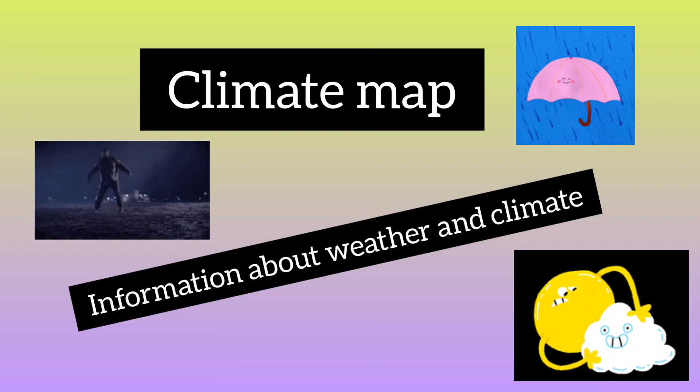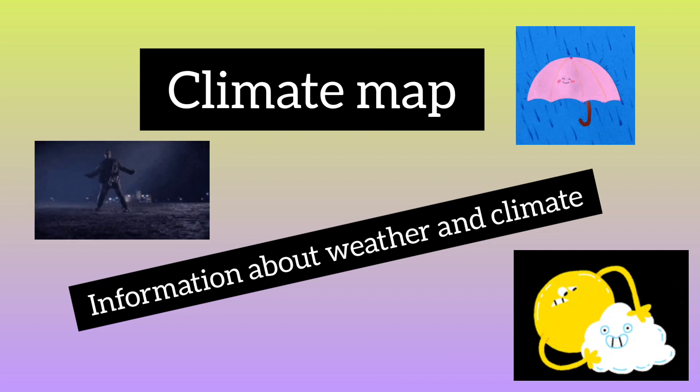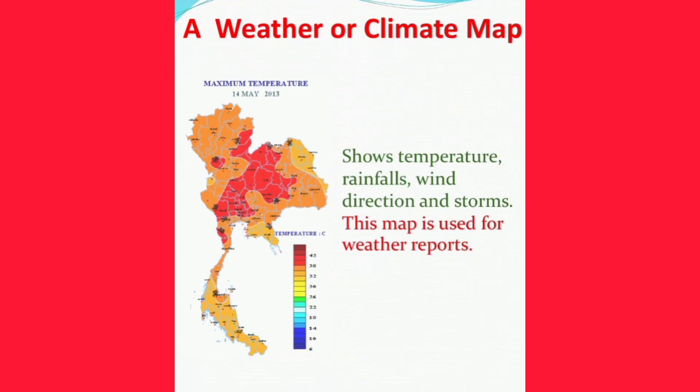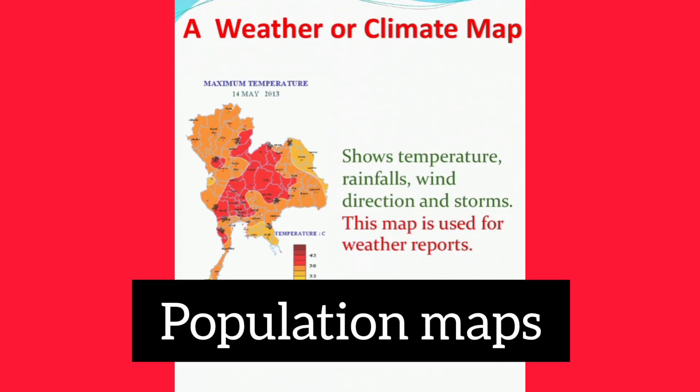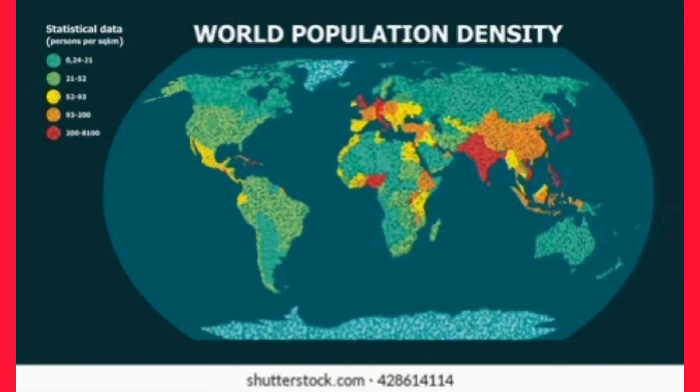For example, a climate map gives information only regarding the climate in that area. Another example is a population map, which provides only the information about the density of population of a place.